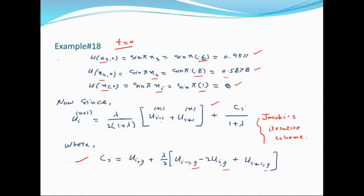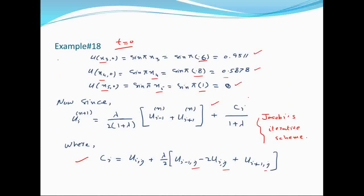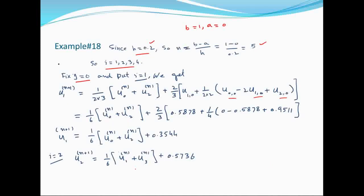Different i values put करते जाएंगे। u₀₀, u₁₀, u₂₀ जैसी values आएंगी। j=0 और i=1 रखने के बाद lambda की calculated values put करने पर numeric value 0.3544 आती है।